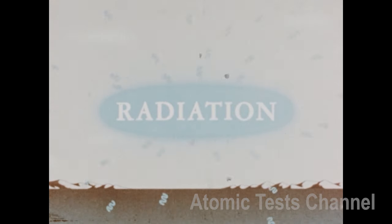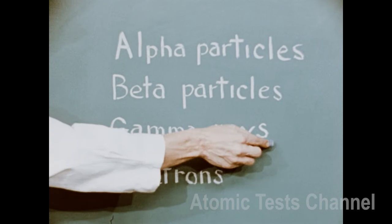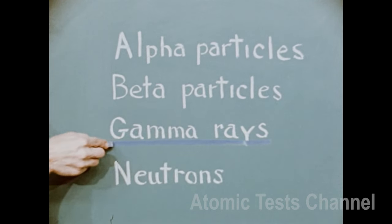Finally, let's take the factor of ionizing radiations. In any nuclear explosion, four different ionizing rays or particles are emitted. Of these, gamma rays and neutrons are of greatest immediate importance.